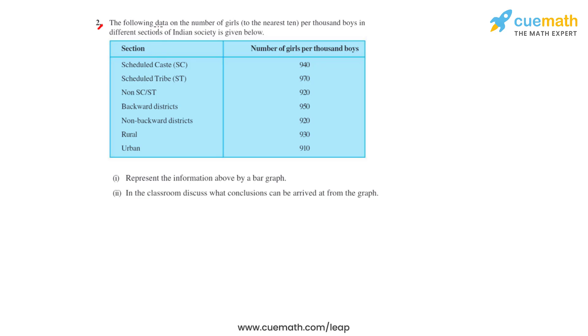Question number two provides data on the number of girls to the nearest ten per thousand boys in different sections of Indian society. The sections include scheduled caste, scheduled tribe, non-SC/ST, backward districts, non-backward districts, rural, and urban, with each section showing the number of girls per thousand boys.